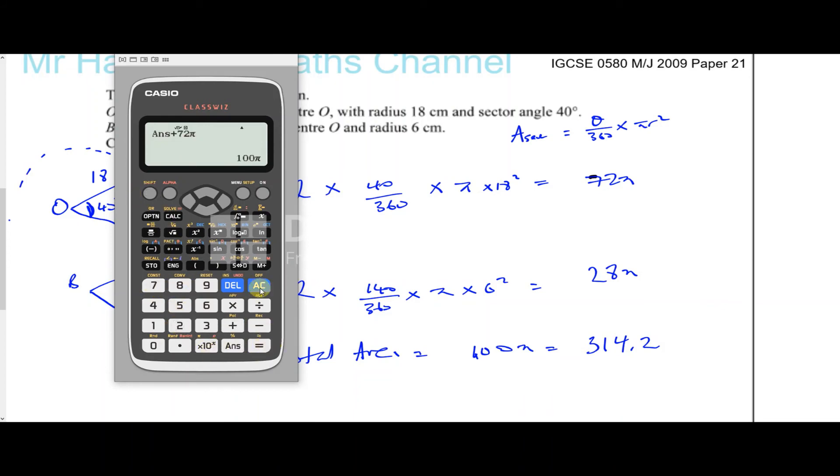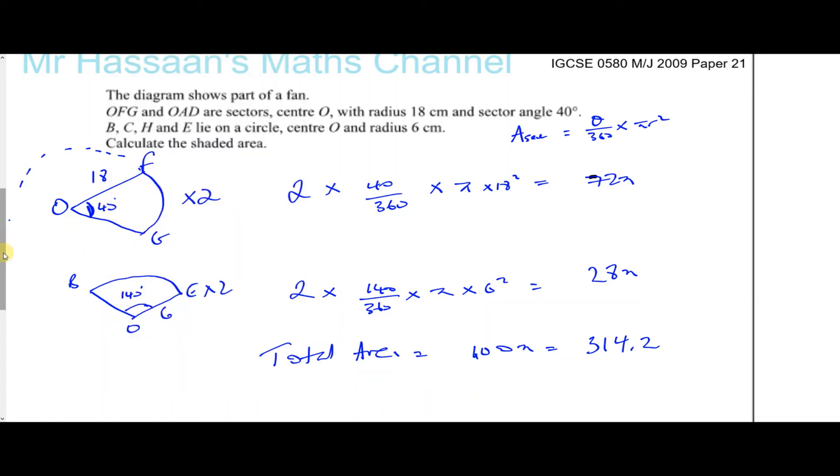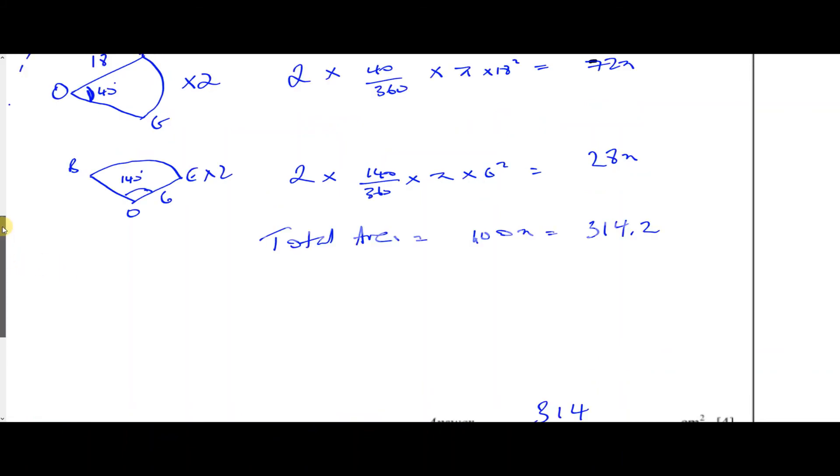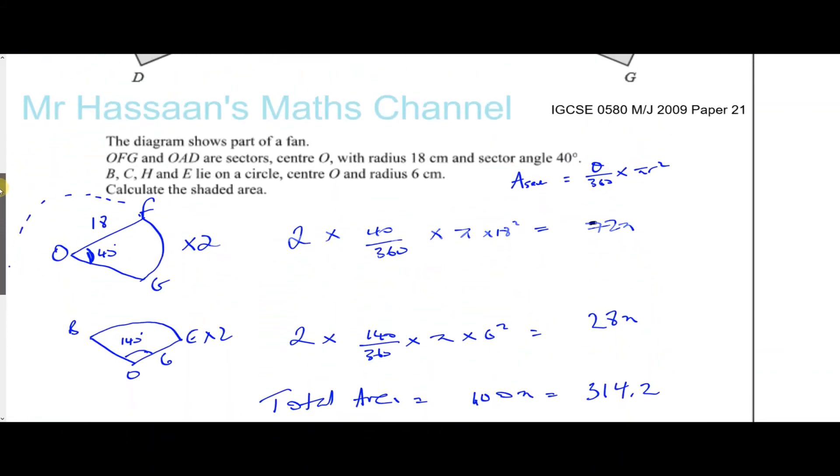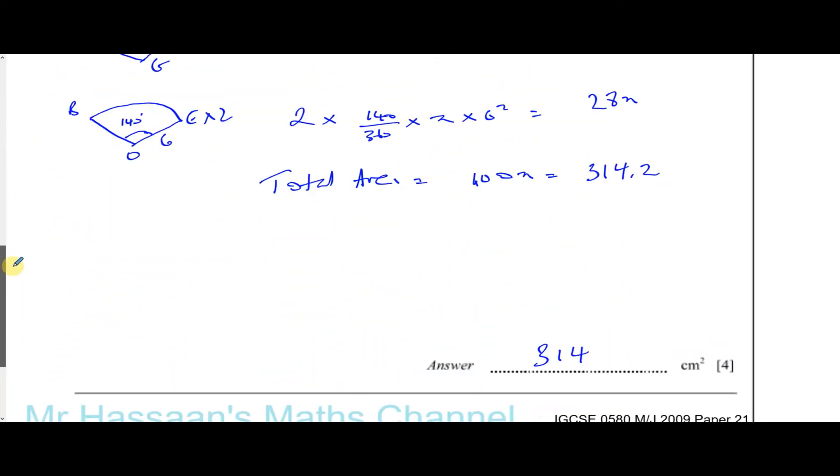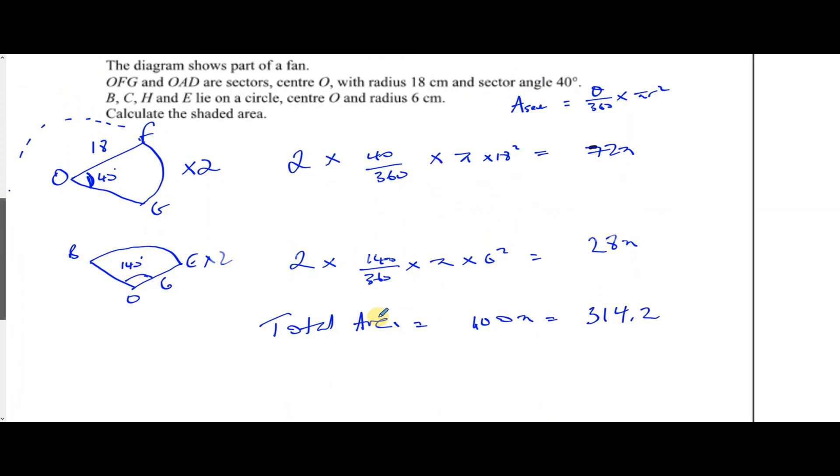314.2, but we should round our answers to three significant figures. So the final answer for this question is 314 centimeters squared. If the answer is not exact, we should round to three significant figures, as is the instruction at the beginning of the paper.